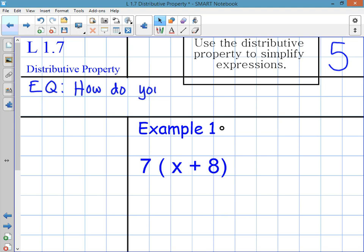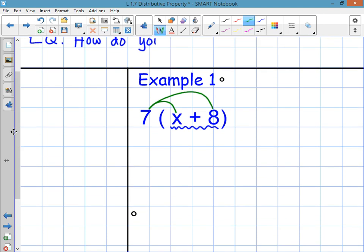So copy example 1 in your notes. This problem says 7 times x plus 8. And the reason you'd use the distributive property is because you can't add x plus 8 together. They're not like terms. So you have to distribute. So when you distribute the 7 to the x and the 7 to the 8 you get a new expression. I'm going to show you how to write it out and some of you will say well do I have to do it that way? Yes. For this assignment I want you to write out each step.